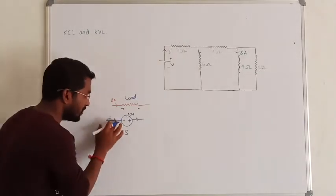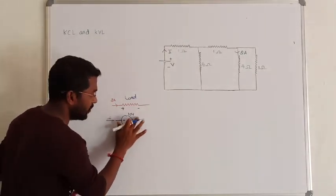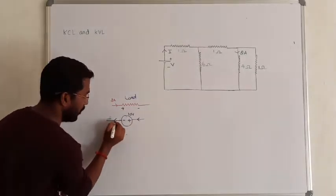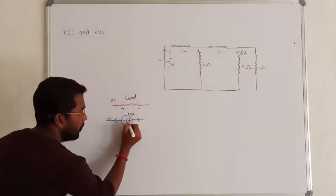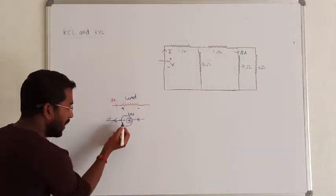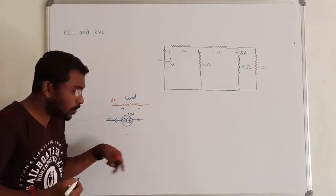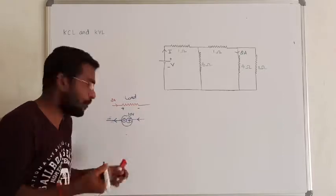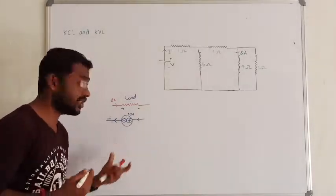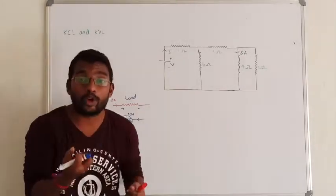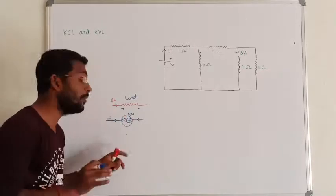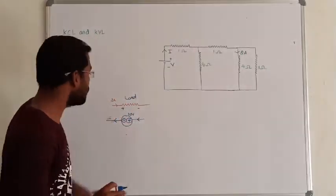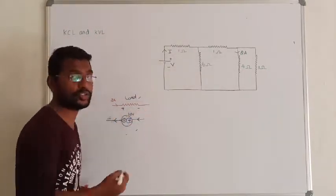In the source, the direction of the current is reversed. If the current entering point is plus and leaving point is minus, the source absorbs power — it does not deliver any power. That is the difference between load and source.